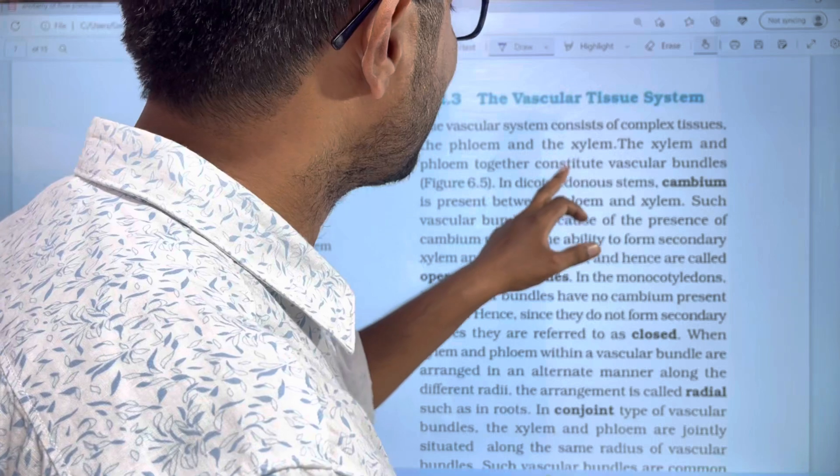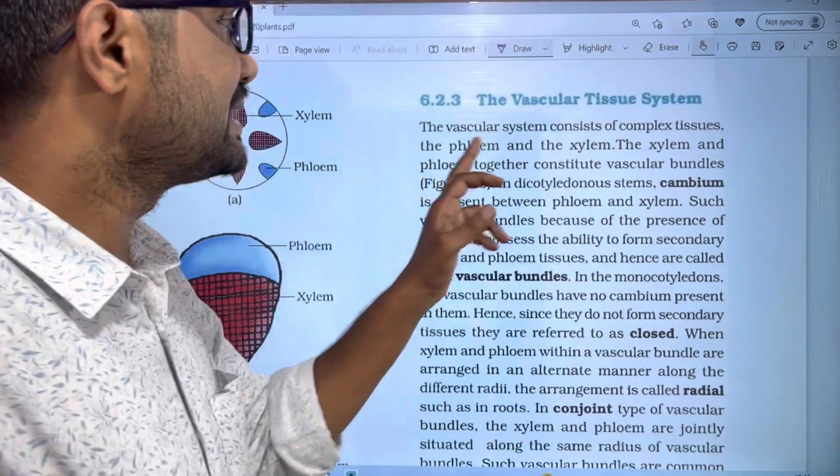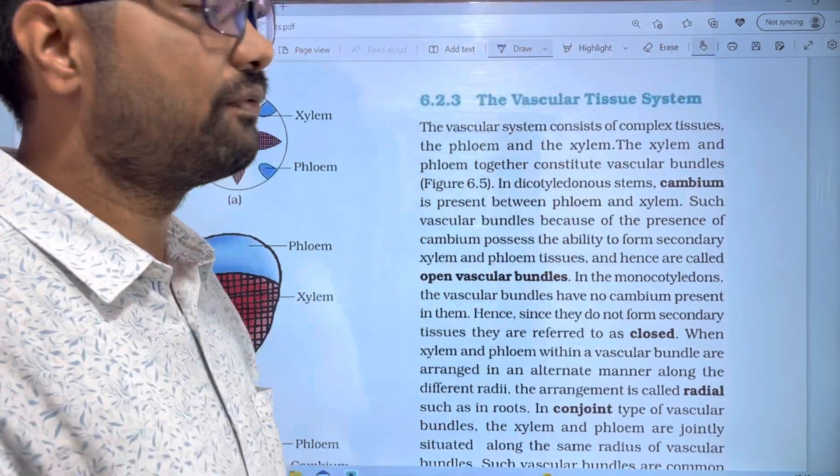Xylem and phloem together constitute vascular bundles. Xylem and phloem together consist of vascular bundles.